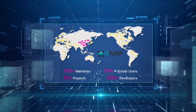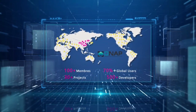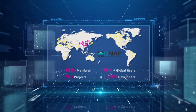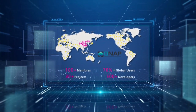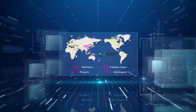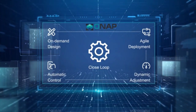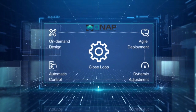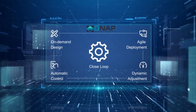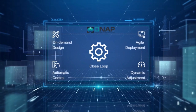As the biggest open-source community in LFN, ONAP expands rapidly in the last two years, owning more than 100 members and over 70% global users. By taking advantage of the strong orchestration ability of ONAP, intelligent scheduling, agile deployment, and dynamic adjustment are becoming reality.